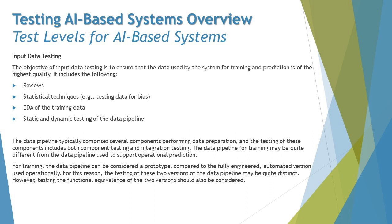The first level specific to AI-based systems is input data testing. As the name suggests, we are talking about the data sets applied to the AI-based system. The objective of input data testing is to ensure that the data used for training and prediction is of the highest quality. It includes reviews, statistical techniques, testing data for bias, exploratory data analysis (EDA) for training data, and static and dynamic testing of the data pipeline.